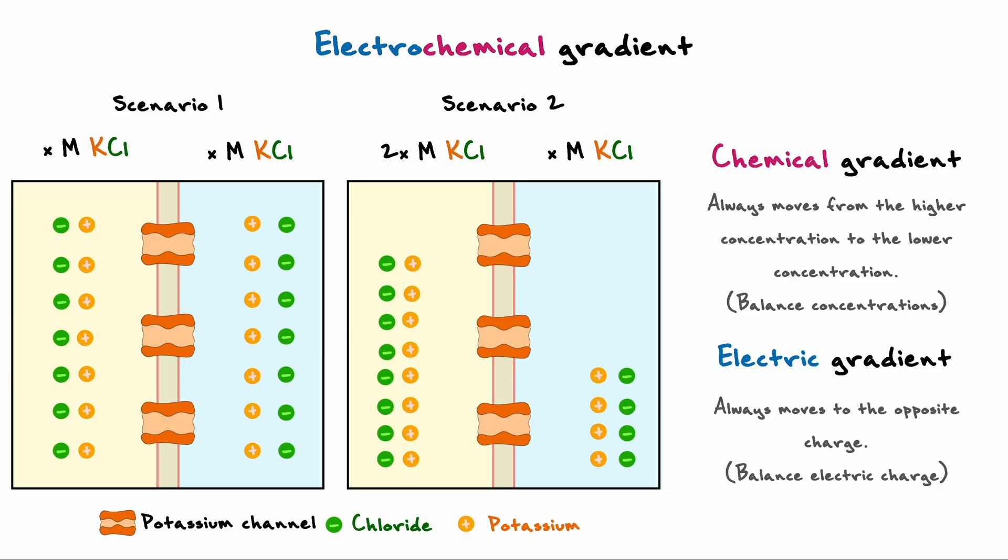This ideal situation is exactly what is depicted in the first scenario, where there is no imbalance in either charge or concentration, so even though the potassium ions can cross the membrane, there is no net change in charge or concentration.